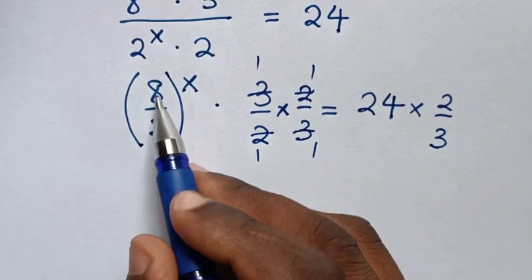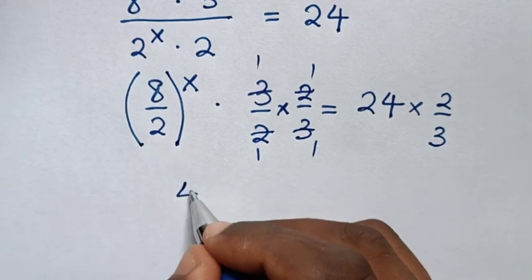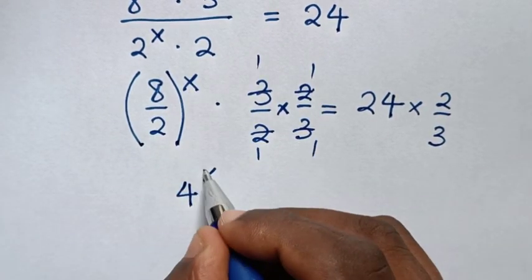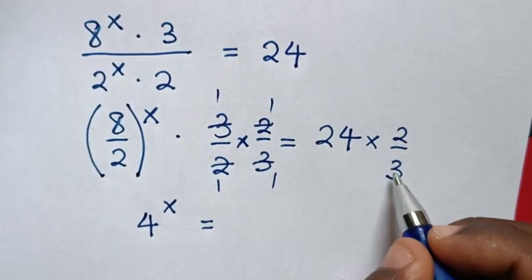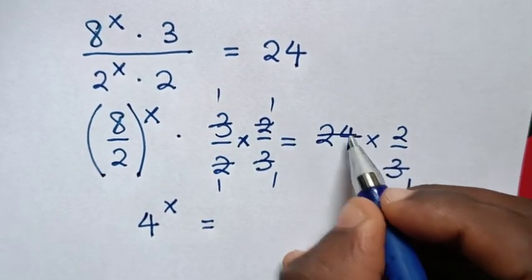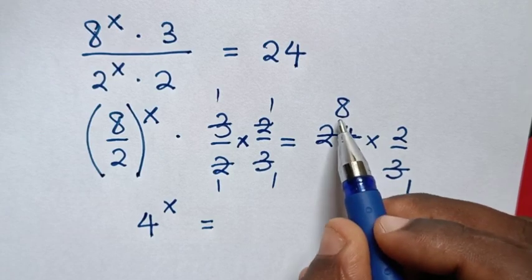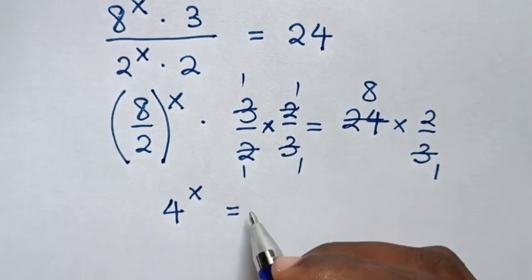Then 8 divided by 2 is 4, power of x is equal to... To simplify, here 3 will cancel by 1 and this by 8. Then 8 times 2 is 16.